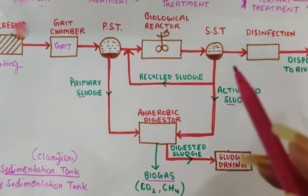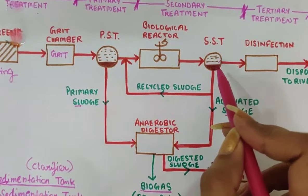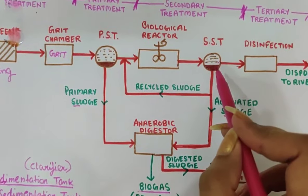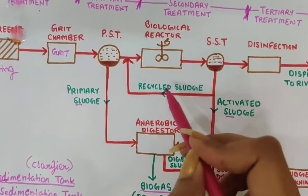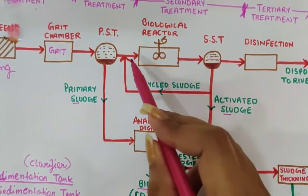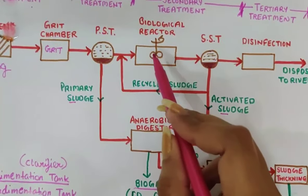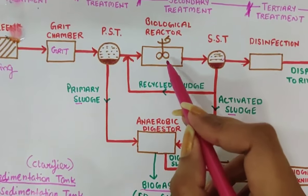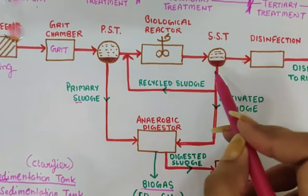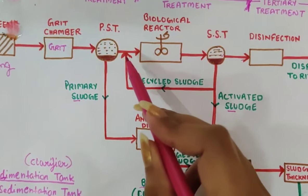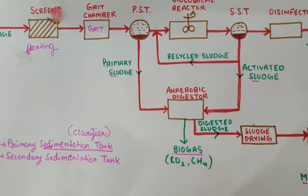In this flow sheet, some sludge is also recycled. Some part of the activated sludge is sent back to the biological reactor tank to support and accelerate decomposition. These microorganisms that were already active help speed up the process — just as more people eating organic matter will finish it faster. However, we recycle only the activated sludge, not the primary sludge.